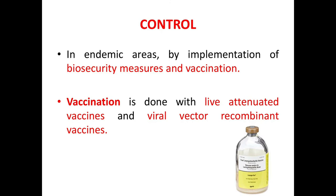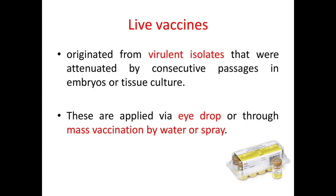Now let's see the control measures for ILT. In endemic areas, control is mainly implemented by biosecurity measures and vaccination. Vaccination is done either with a live attenuated vaccine or a viral vector recombinant vaccine. Live vaccines are originated from virulent isolates attenuated by consecutive passages in embryos or tissue culture, and are applied via eye drop or through mass vaccination by water or spray.